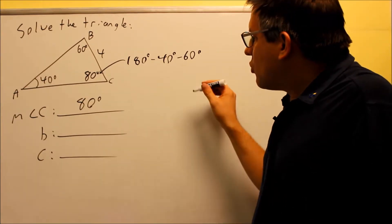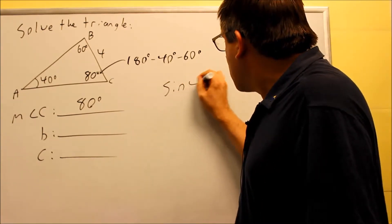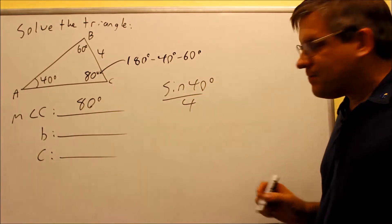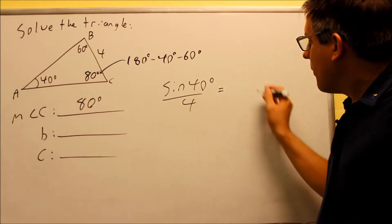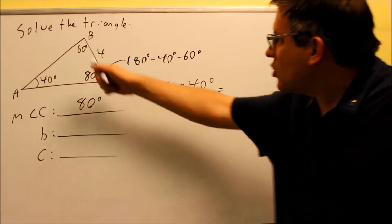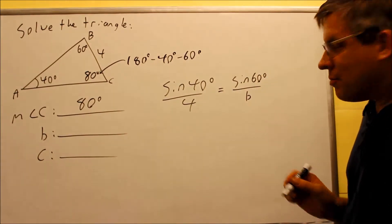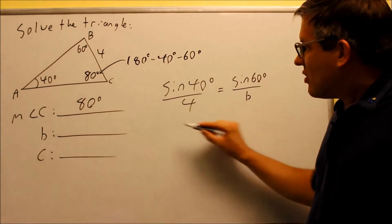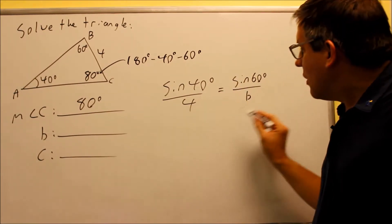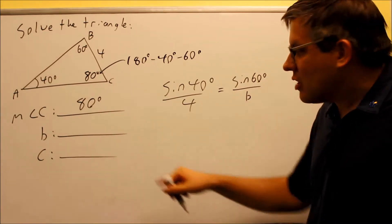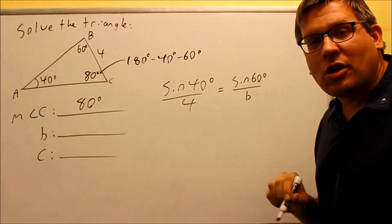Now we'll solve for side B first. You want to begin with the known ratio — in this case, sine 40 over 4, which is given. We set this equal to sine of 60 degrees over side B, because 60 degrees is the angle opposite side B that we're trying to solve for. You always want to begin with the known ratio, then set it equal to the ratio involving the side you're finding.